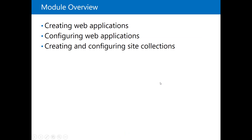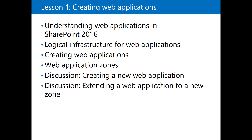So what is a web application? By end of day it gives you two things: first, a place or a URL inside IIS to access that internet zone — that's why Microsoft discusses web application zones. Second, it gives you a content database with a name you specify, which will contain all the documents, lists, and records of that web application.